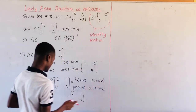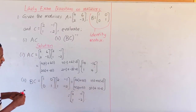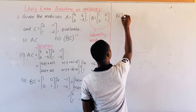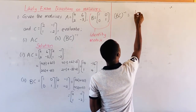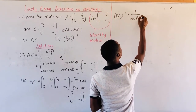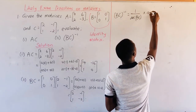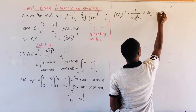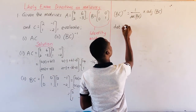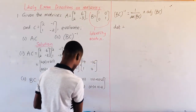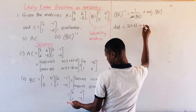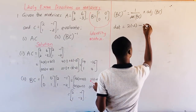Now let's find the inverse of B times C. The inverse of any matrix is 1 over the determinant of that matrix, times the adjoint of that matrix. The determinant is given by the product of the leading diagonal minus the product of the minor diagonal.